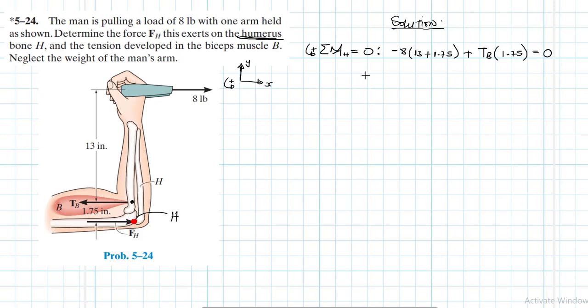So making TB subject to the formula, what do we have? Grab your calculator and do the calculation so we have 8 times 14.75 divided by 1.75 so we have TB equal to 67.43 pounds. Let me just come again, 8 by 14.75 divided by 1.75, 67.43.